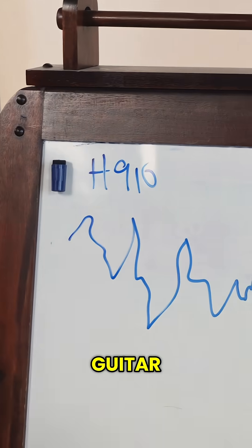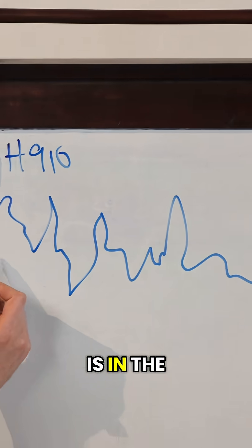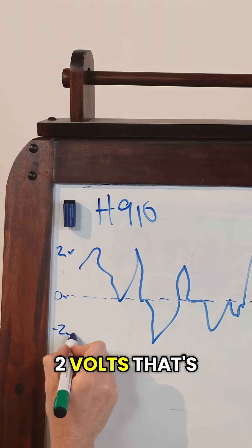That could be a vocal, that could be a guitar. With an audio signal, we have zero volts in the middle. We'll say like two volts, and we'll say minus two volts.